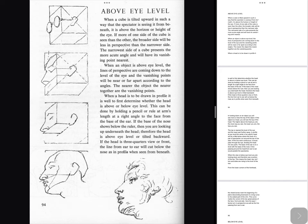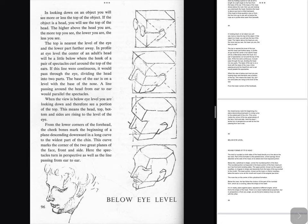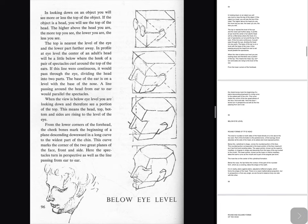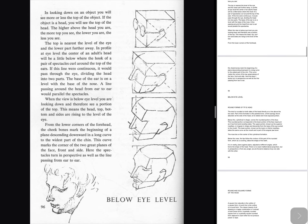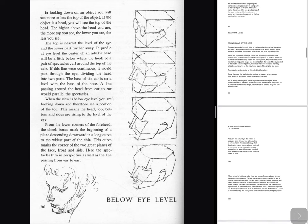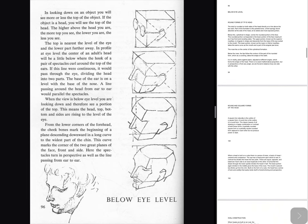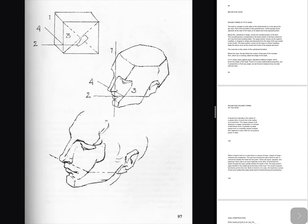When a head is to be drawn in profile, it is well to first determine whether the head is above or below eye level. This can be done by holding a pencil or rule at arm's length at a right angle to the face from the base of the ear. If the base of the nose shows below the ruler, then you are looking up underneath the head — therefore the head is above eye level or tilted backward. Below eye level: in looking down on an object you will see more or less the top of the object. The higher above the head you are, the more top you see; the lower you are, the less you see. In profile at eye level the center of an adult's head will be a little below where the hook of a pair of spectacles curl around the top of the ears. The base of the ear is on a level with the base of the nose. When the view is below eye level you are looking down and therefore see a portion of the top. From the lower corners of the forehead, the cheekbones mark the beginning of a plane descending downward in a long curve to the widest part of the chin. This curve marks the corner of the two great planes of the face, front and side. Here the spectacles turn in perspective as well as the line passing from ear to ear.